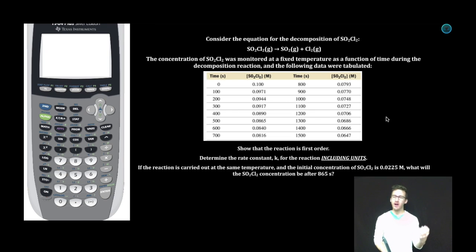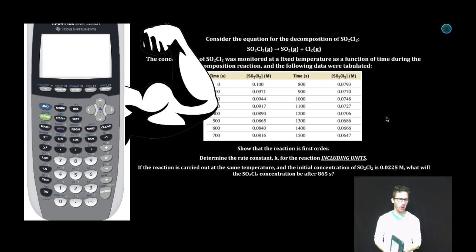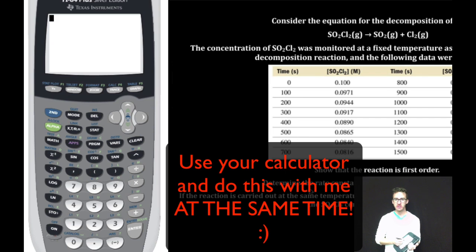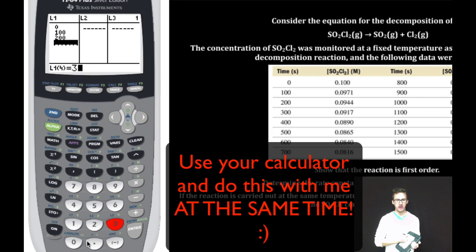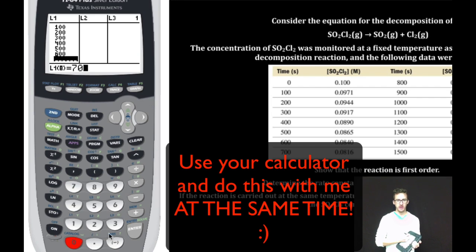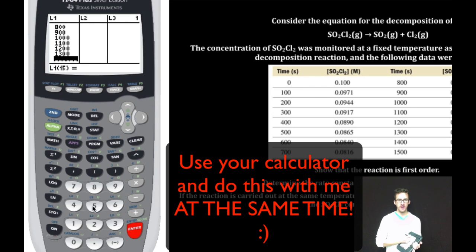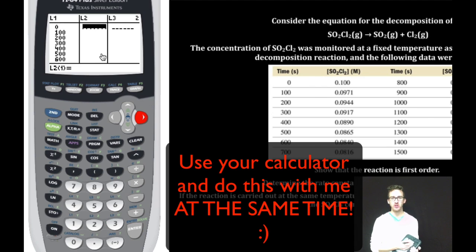To do this, we're going to use the power of our calculator. First, I'm going to put these lists into my calculator. I'll hit stat edit. For my L1 column, I'm going to put the time: 0, 100, 200, 300, 400, 500, 600, 700, 800, 900, 1000, 1100, 1200, 1300, 1400, 1500. Next, I'm going to move over to my second column and enter the concentrations.